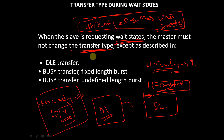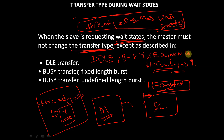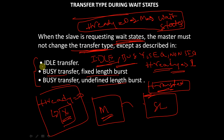We know the transfer type can be idle, busy, sequential, or non-sequential — we have already seen these transfer types in previous videos. When the slave is asking for a wait state, the master should not change the transfer type except in three conditions: when it is idle transfer, when it is busy transfer with fixed-length burst, and when it is busy transfer with undefined-length burst.